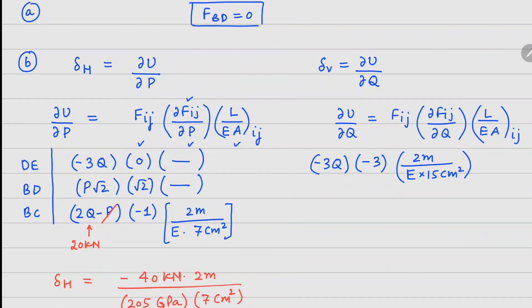For the second term, because P is appearing there, the value of P is 0 anyway, so this term is 0. For the last one, your force is 2Q minus P, derivative with respect to Q is 2, length 2 meters divided by E into 7 centimeter square. The value of Q is 20 kilonewtons and P is 0.